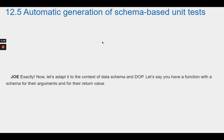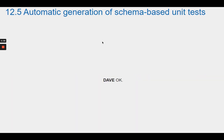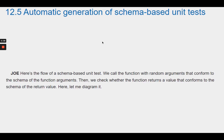Joe confirms that's exactly right, and says let's adapt it to the context of data schema and DOP. If you have a function with a schema for its arguments and its return value, here's the flow of a schema-based unit test: call the function with random arguments that conform to the schema of the function arguments, then check whether the function returns a value that conforms to the schema of the return value.